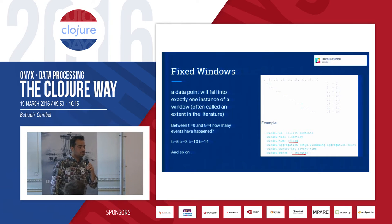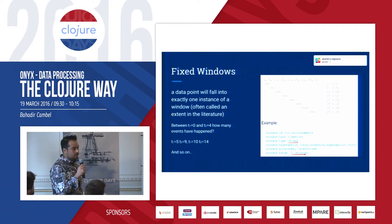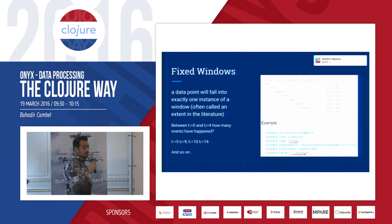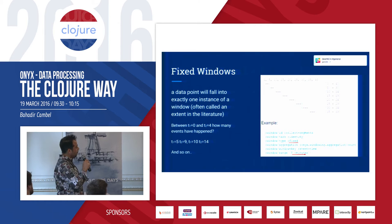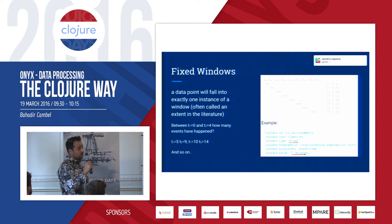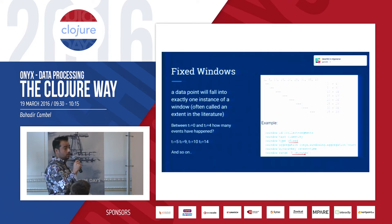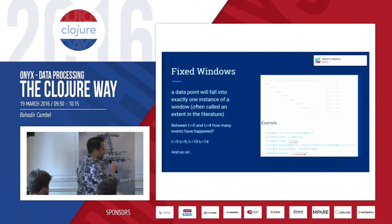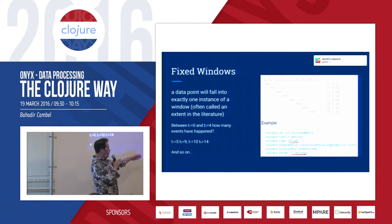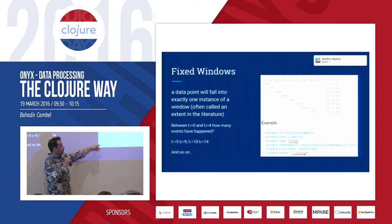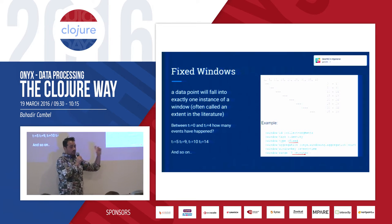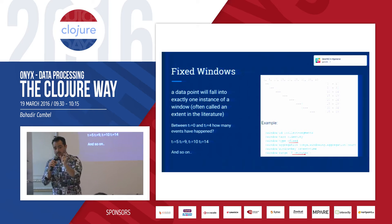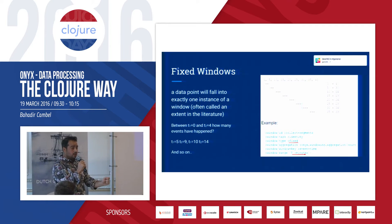Let's look at an example of fixed windows — one of the most common aggregation use cases. For example: how many registrations happened between noon and 9 o'clock? Any kind of fixed window that you want to have, you can do counts based on data. Here we specify which key to use for the time window — we use the event time — so our data should contain an event-time key, and Onyx will look at that key and place that data into one of the buckets to produce a count.